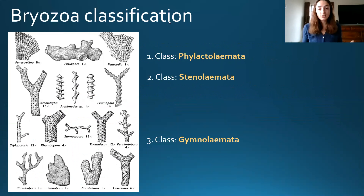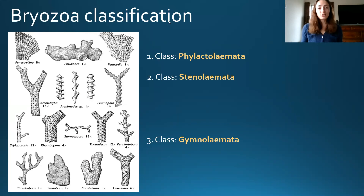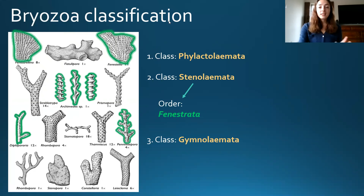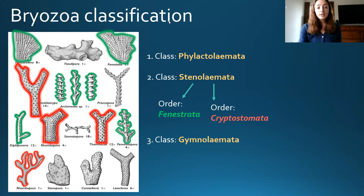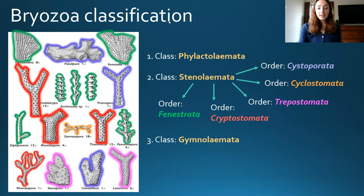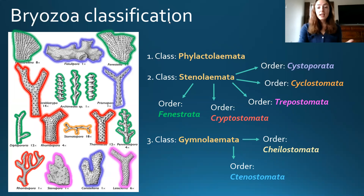Now let's talk about the general classification of bryozoans. We have the class Phylactolaemata, which is a recent class with no fossils, so we won't focus on it. We will be discussing the class Stenolaemata, which contains many important and distinct orders — including Fenestrata, Cryptostomata, Trepostomata, Cyclostomata, and Cystoporata — that are very helpful fossils for reconstructing Earth's history. Then we have the class Gymnolaemata, which contains the orders Ctenostomata and Cheilostomata.